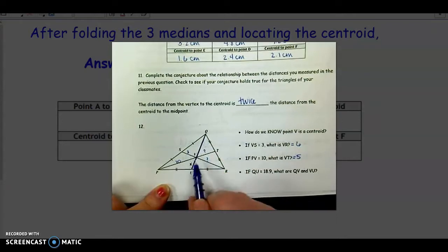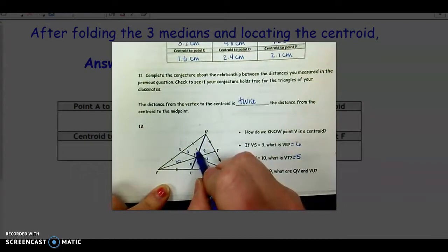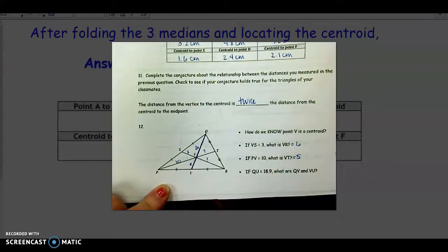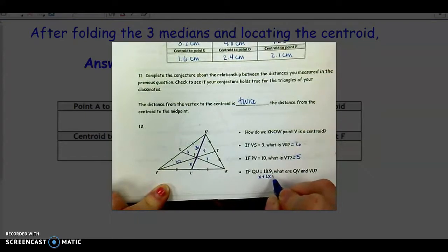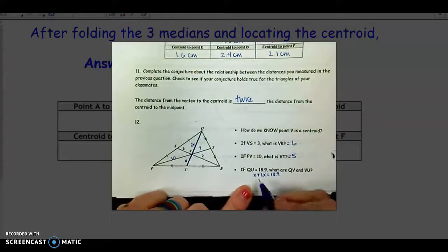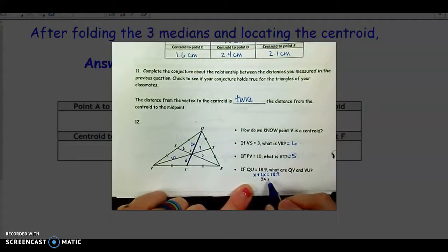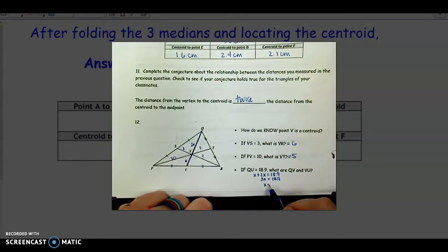So the easiest way to do this is to label the shortest part, that's from the centroid to the midpoint, as X, and the longer part is twice as long, so it would be 2X. And these together make up Q. So X plus 2X is my 18.9. So now I can solve for X. Combining those like terms gives me 3X equals 18.9.